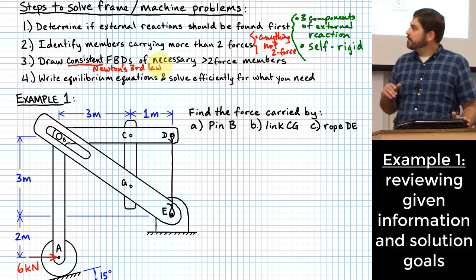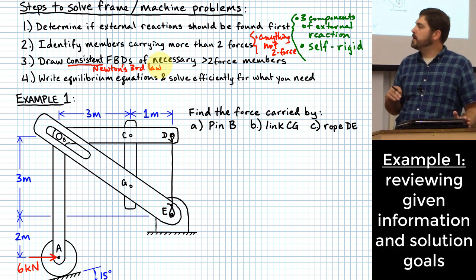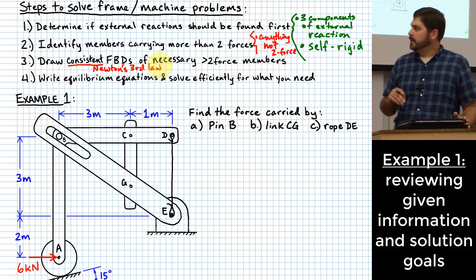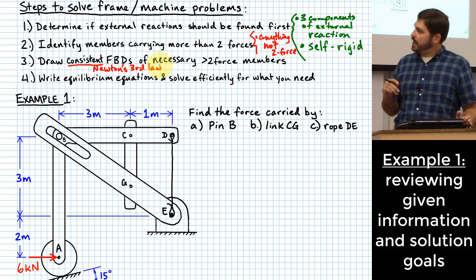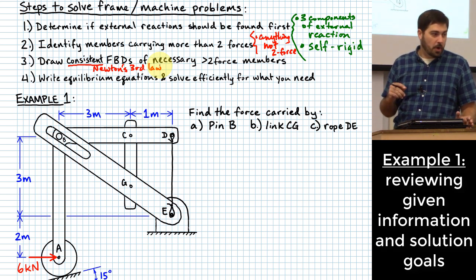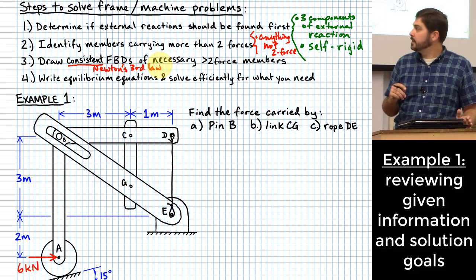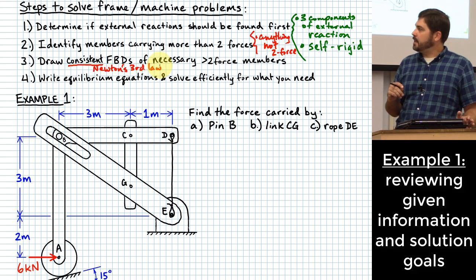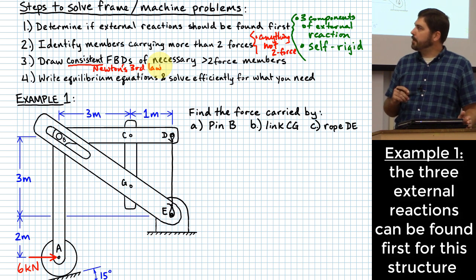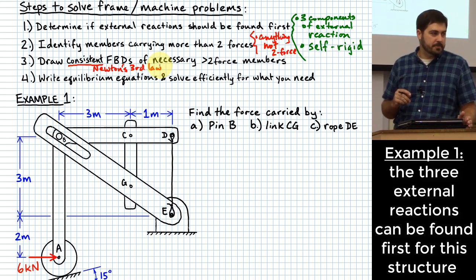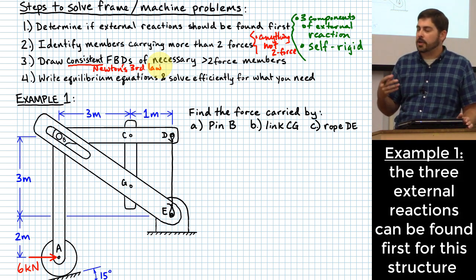Here's our first example. We're supposed to find the force carried by pin B, by link CG, and by rope DE. I have one member that extends from A up to B, over to C, and to D — that's all one member. Then another member going from E to G to B. In addition, I have member CG and member DE. The first step is to determine if external reactions should be found first.